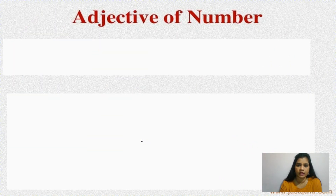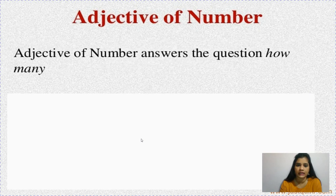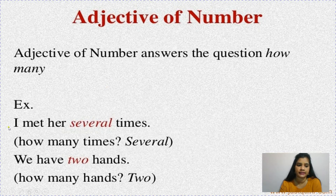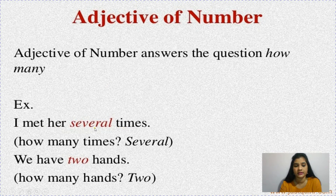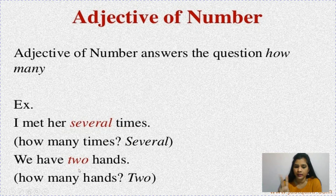Next is adjective of number. From the name itself you can define it — number means how many. An adjective of number answers the question of how many. For example: I met him several times — 'time' is the noun and 'several' tells how many times he has met, so 'several' is an adjective. Another example: we have two hands — how many? Two. So 'two' is an adjective of number.